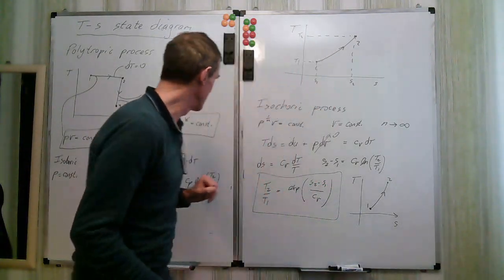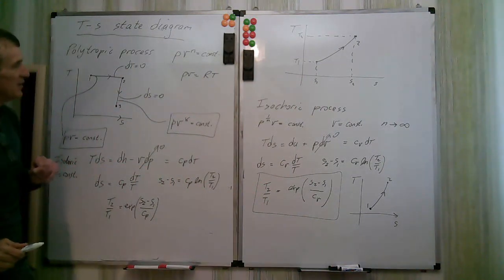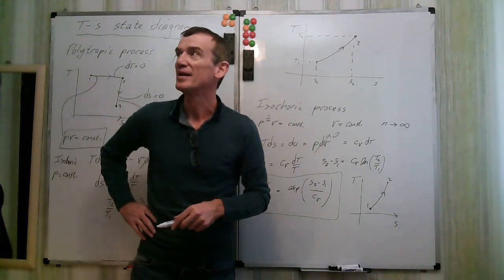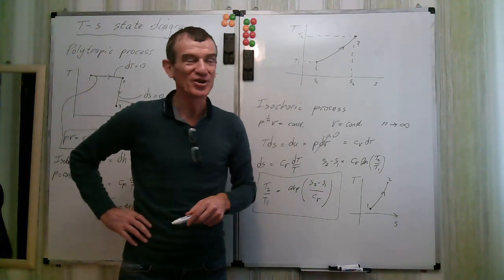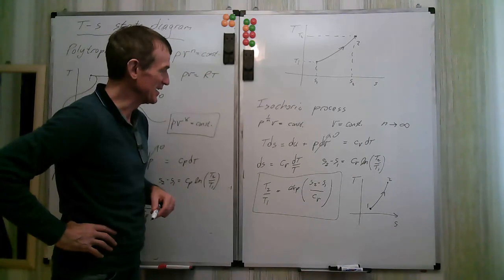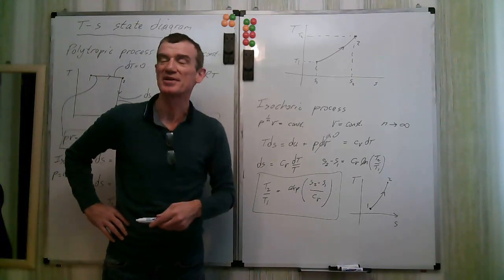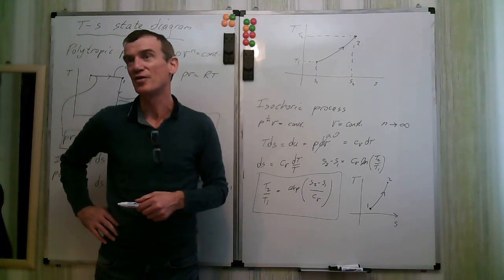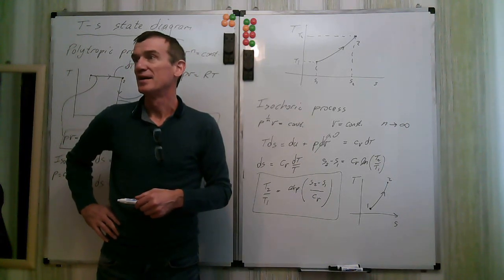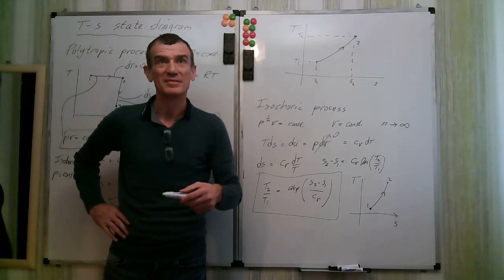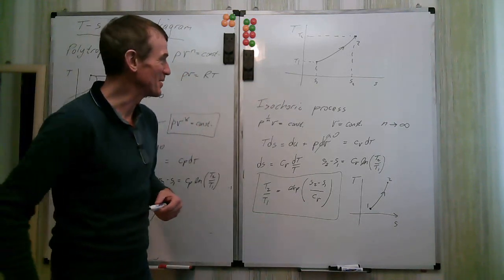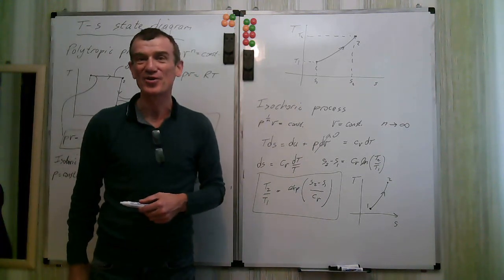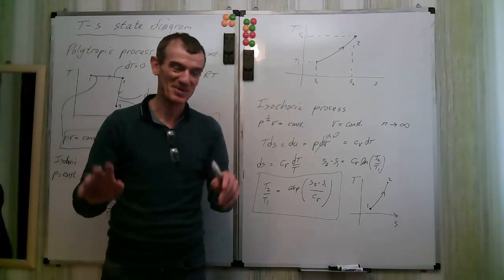On the PV diagram, the isochoric process is a vertical line, while on the TS diagram we get an exponential curve. That's all I really want to say. I do hope you've enjoyed the course. There are videos for worked problems and tutorial sheets and assignments to complete. Bye-bye.